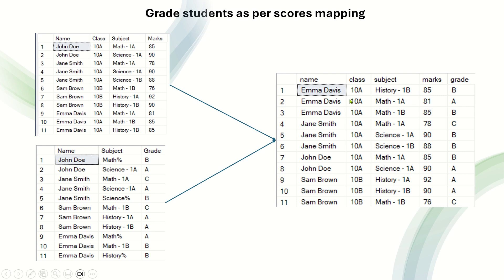For example, Emma Davis math 1a — there is no direct entry, only a generic math% entry, so grade A is assigned. For math 1b there is both a direct entry and a matching wildcard entry, so the direct entry takes highest priority and grade B is assigned for math 1b. For history 1b there is only a history% wildcard match, so grade B is directly considered.